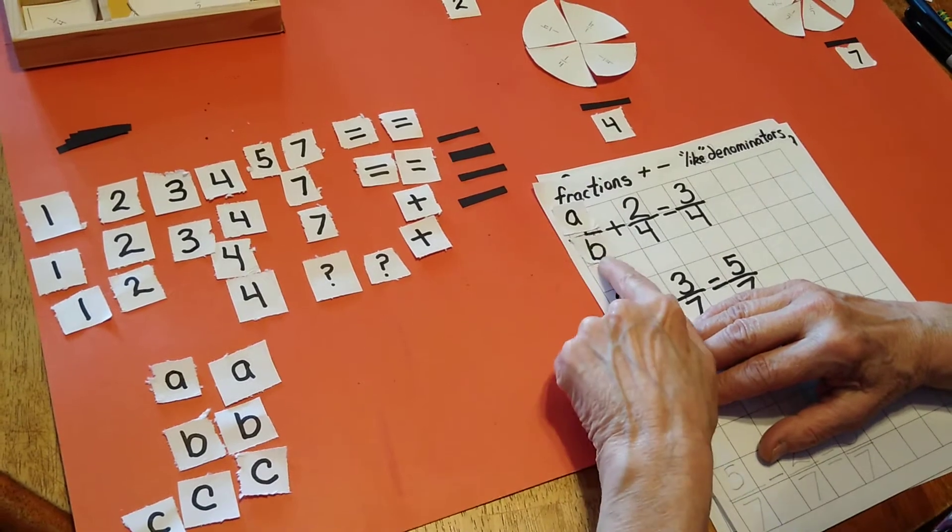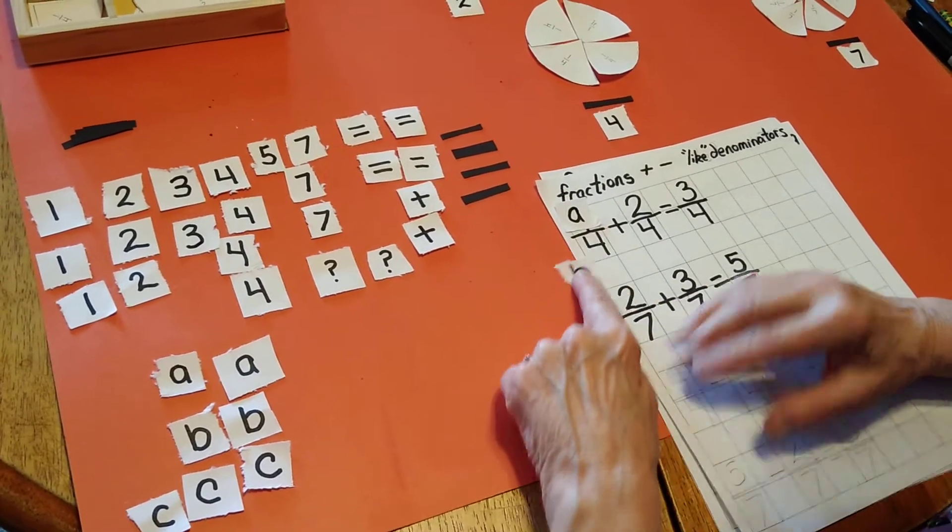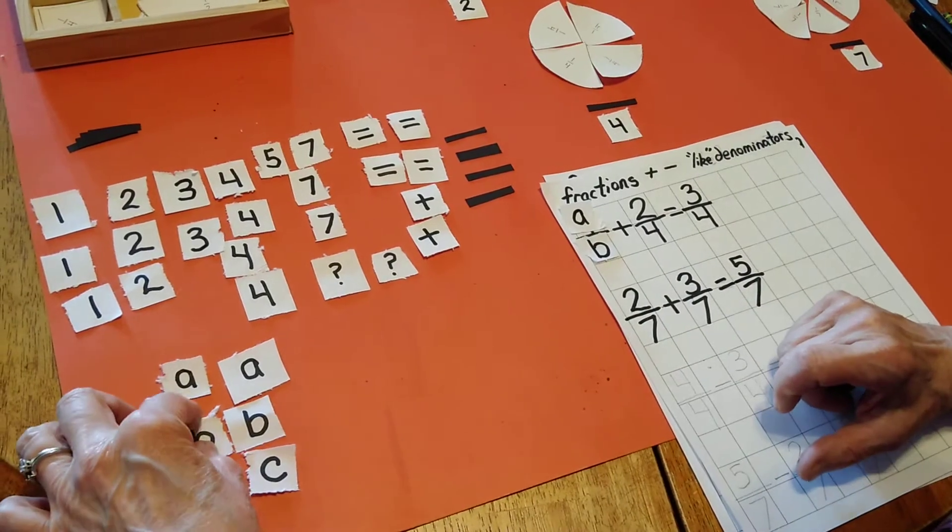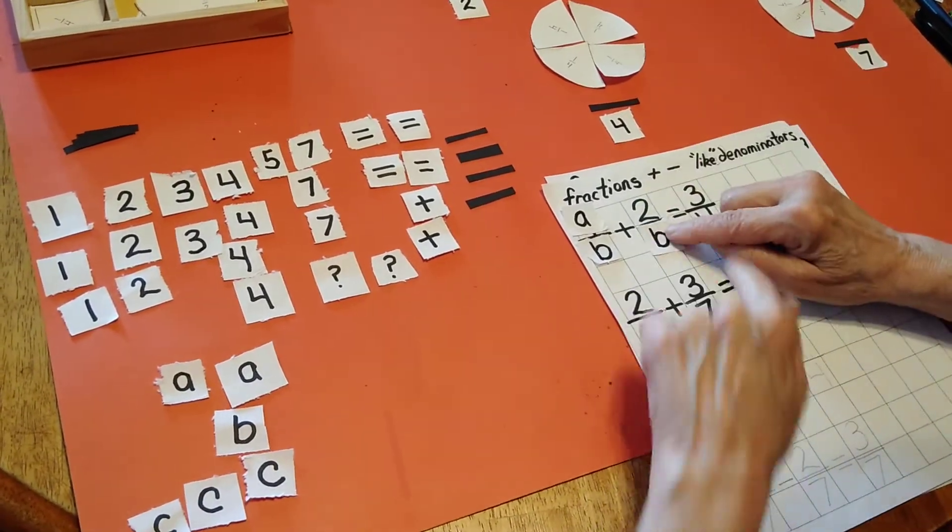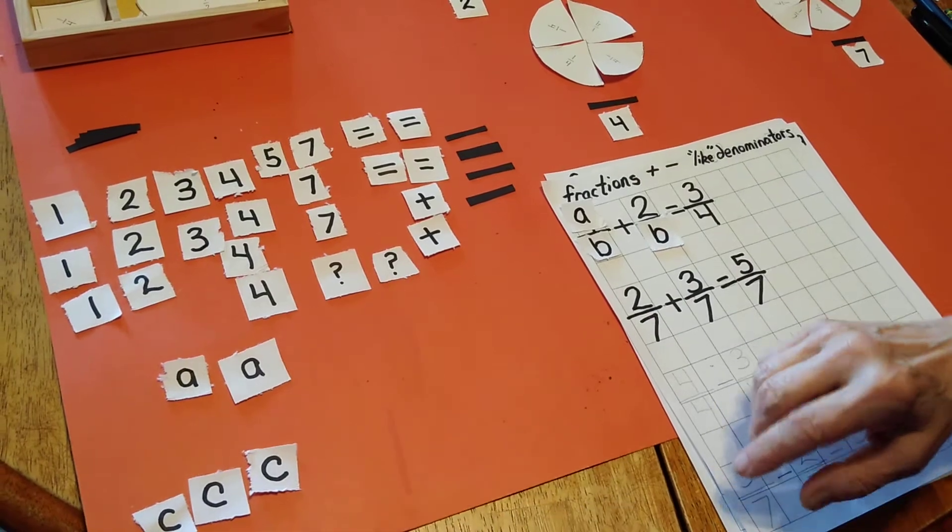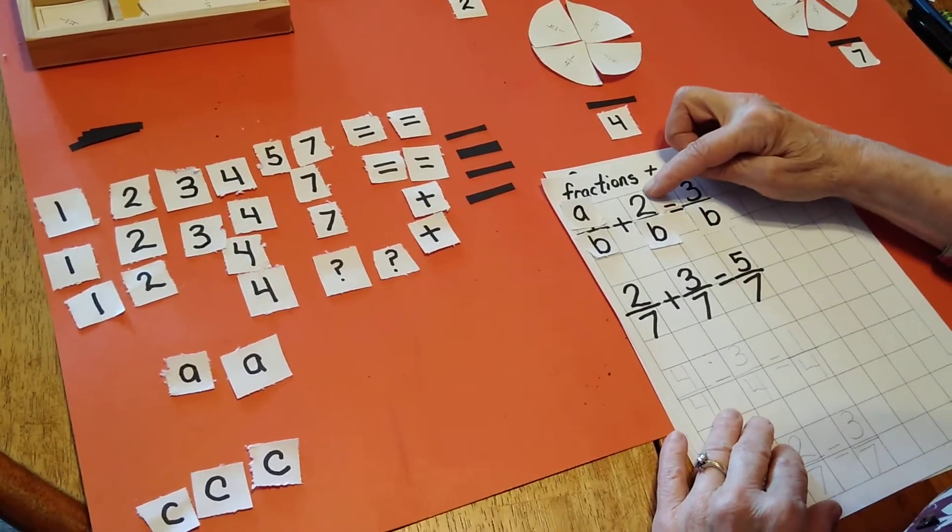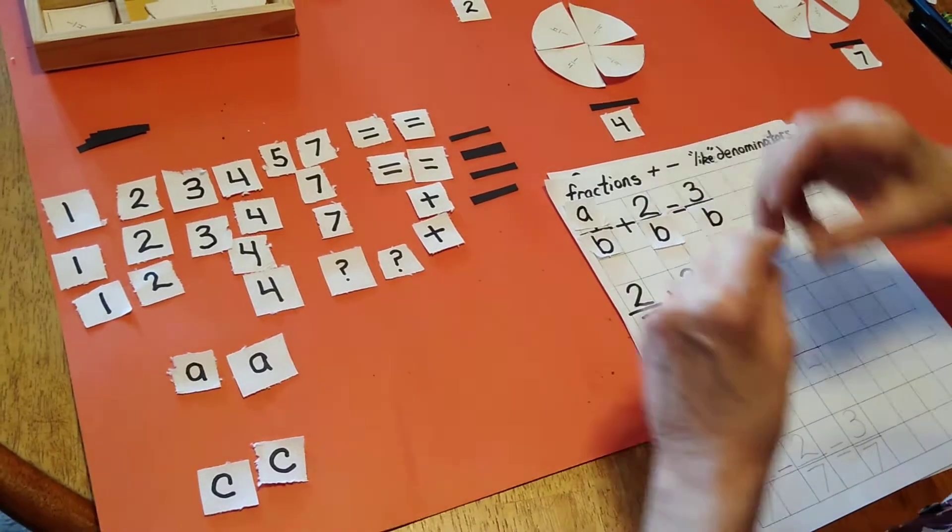B will be my denominator. Since four is the same in all three, I'm going to put a B in each of those places. Two is a new number, so I need to give it a new letter.